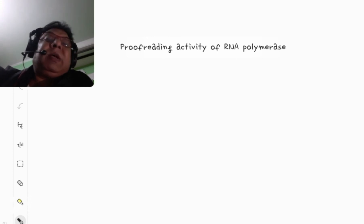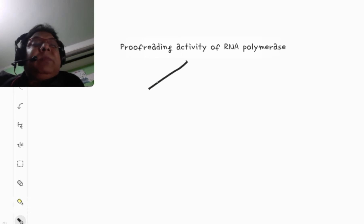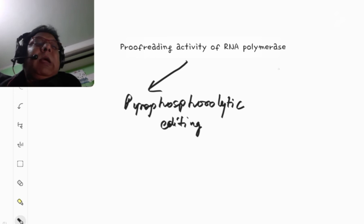However, RNA polymerases also possess two types of proofreading activities. By that, they try to remove the incorrect insertion if it occurs by chance. These are, one of them is called the pyrophosphorolytic editing, and the other one is called hydrolytic editing.